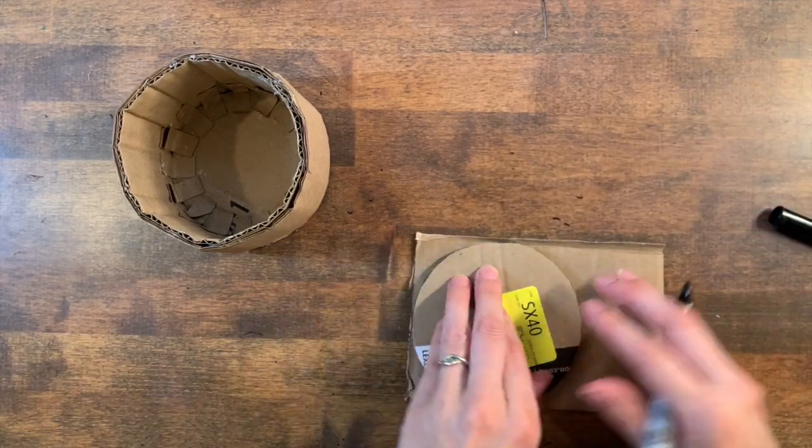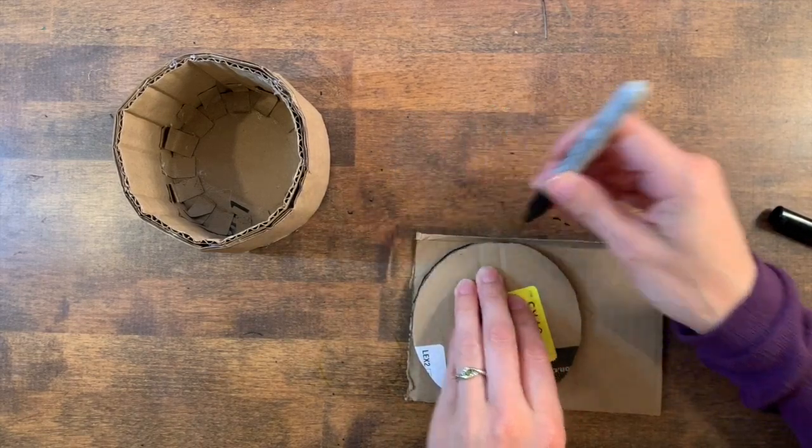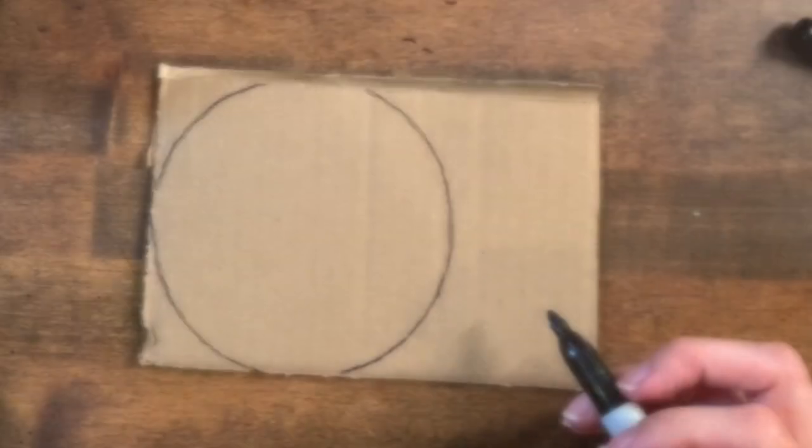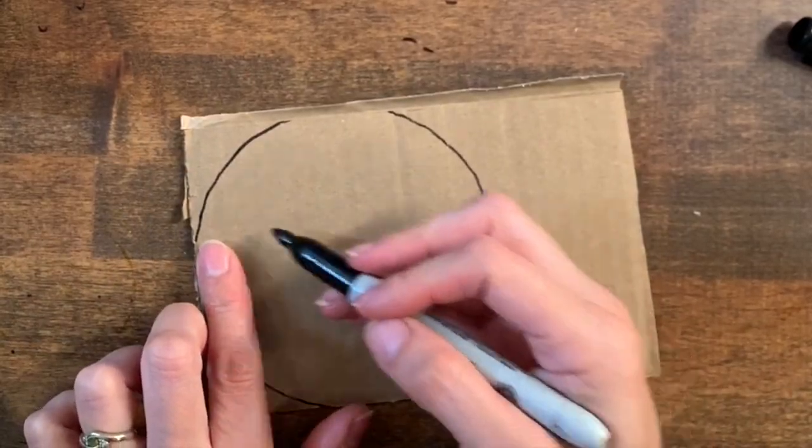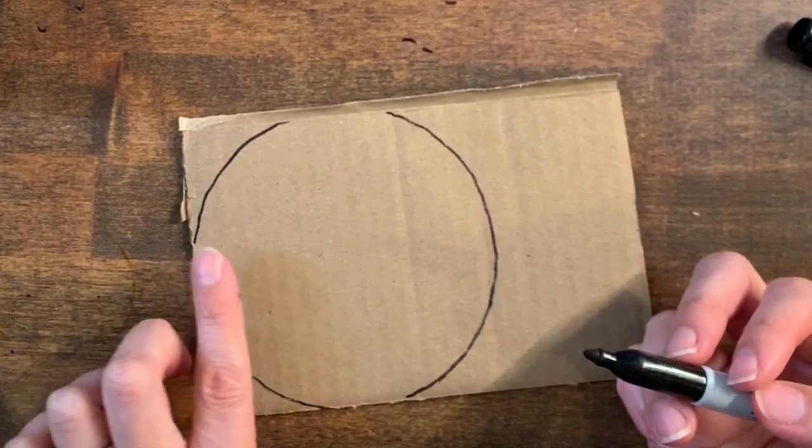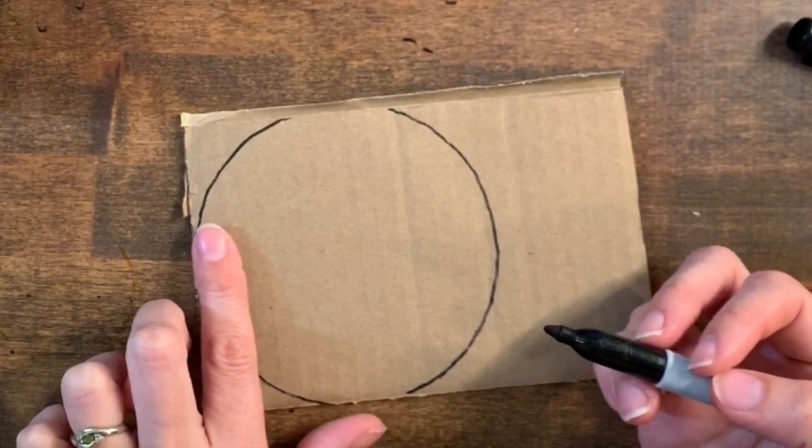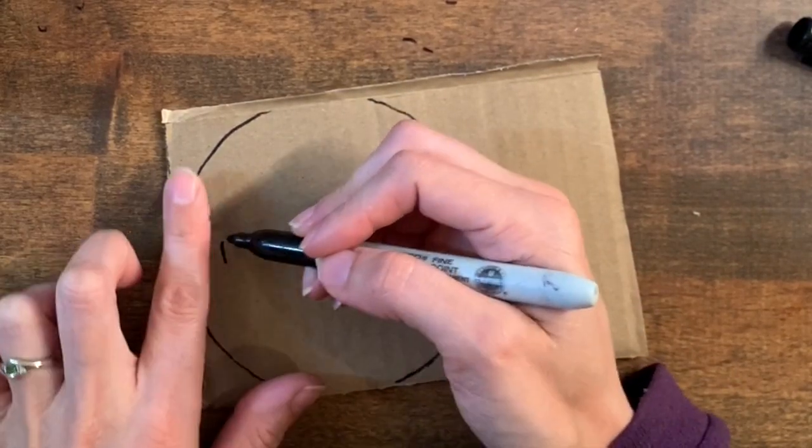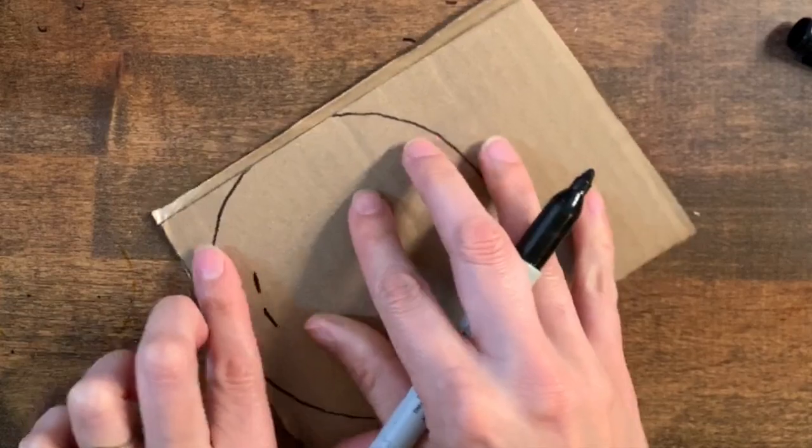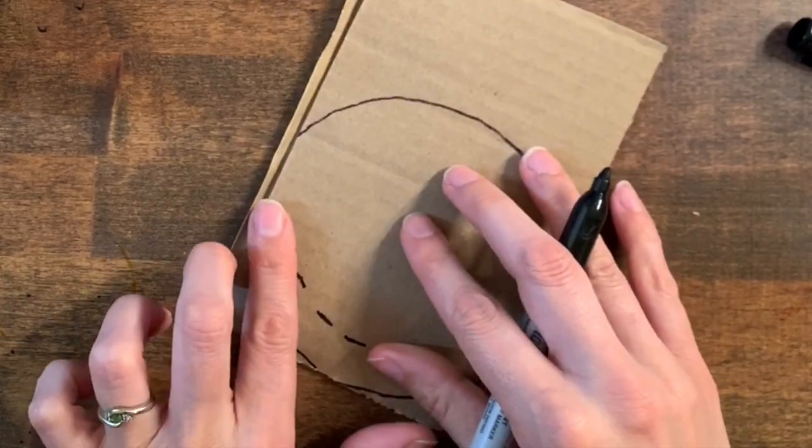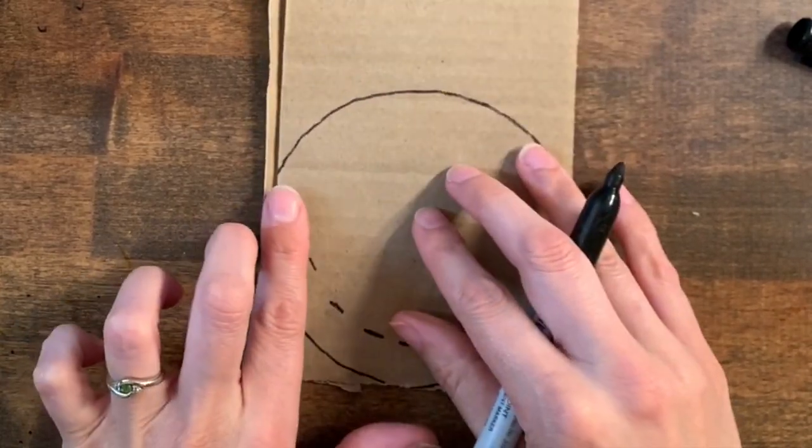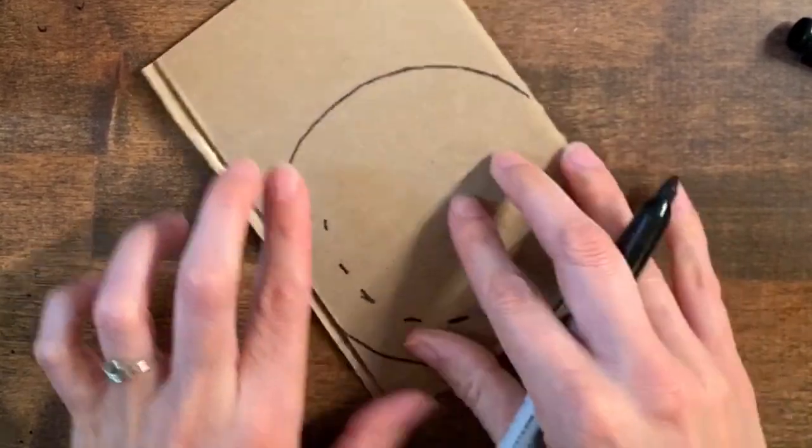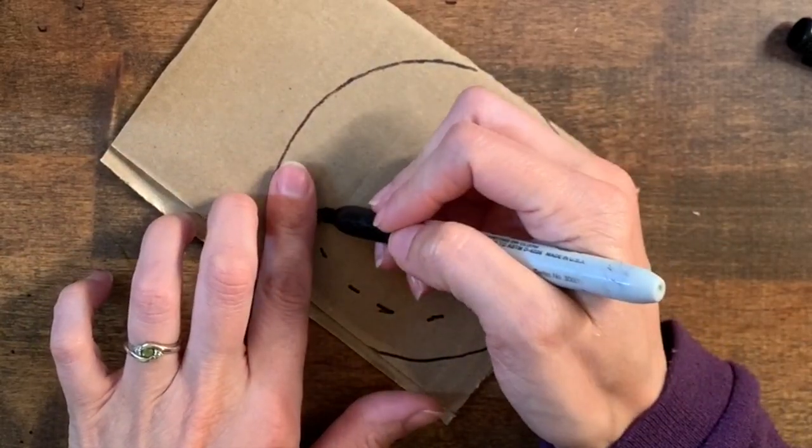We're going to trace them on our cardboard. And we want to make another circle inside. The best way that I've found to do this without a compass is to take a finger and place it on the edge and draw a little dashed line. That way you can be sure you're staying the same distance away from the edge as you do your line.